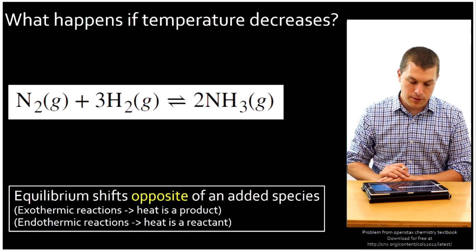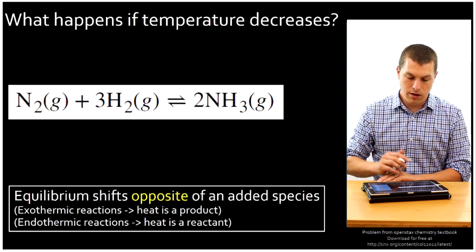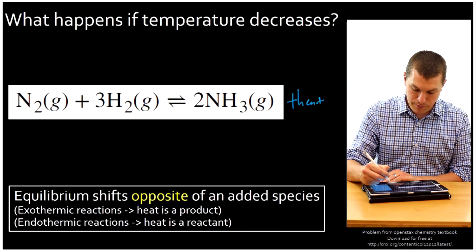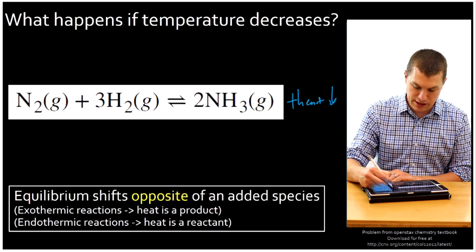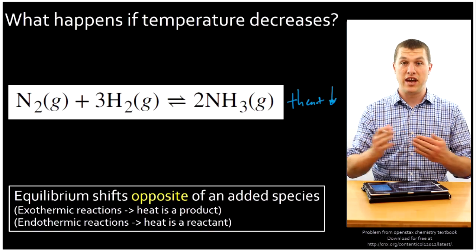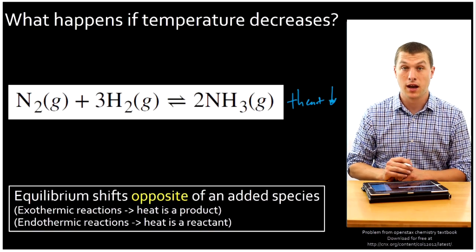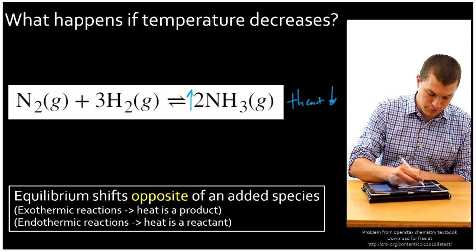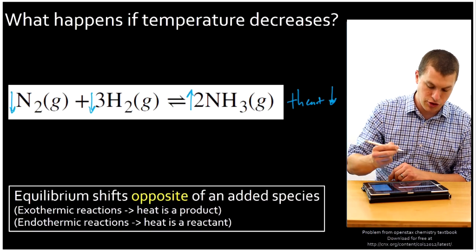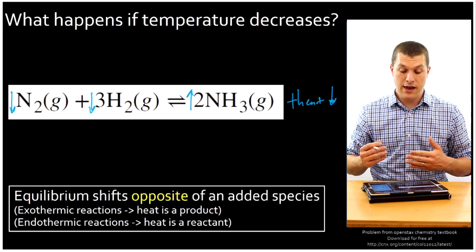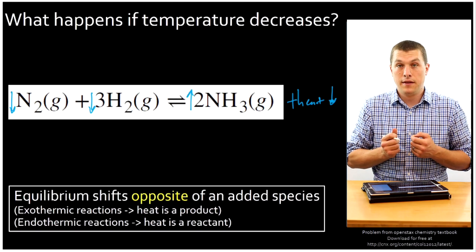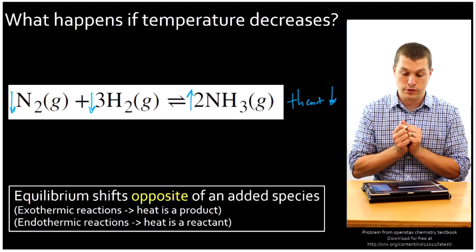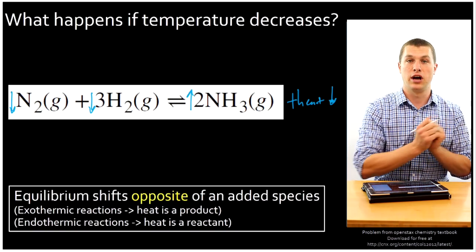What if my temperature decreases? That is similarly like removing a species. If temperature decreases — that is, my heat drops — that's actually going to favor products, because this is an exothermic reaction. That means more ammonia is going to form, and hydrogen and nitrogen are going to drop in concentration. So if I remove something, it shifts the equilibrium towards the side where I've removed stuff; if I add something, it shifts to the opposite side.